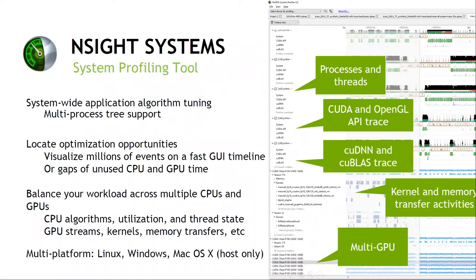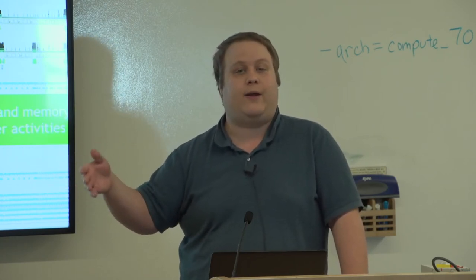With some exceptions, both versions are supported on Linux, Windows, and Mac. The exception on Mac is there's only a viewer version since you're not running on your Mac. On Linux Power9 — what runs on Summit, for example — we only have the collection mode, so you'd have to copy the report back to your local system, install Nsight Systems, and load it up.